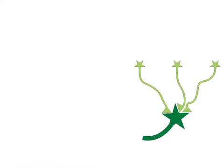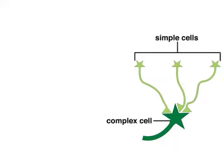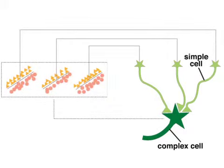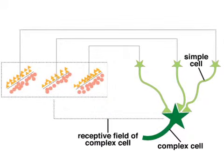Likewise, the receptive field of a complex cell may depend upon the input of simple cells earlier in the visual processing pathway. Here, the dashes represent the receptive field of the complex cell, which is created by the convergent input of the receptive fields of multiple simple cells that have the same orientation preference.